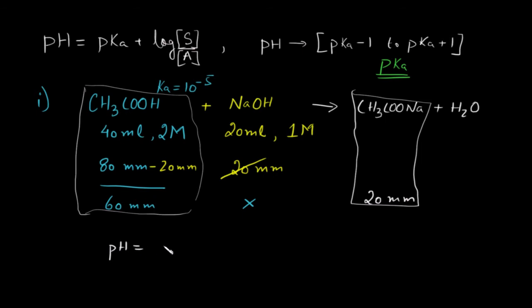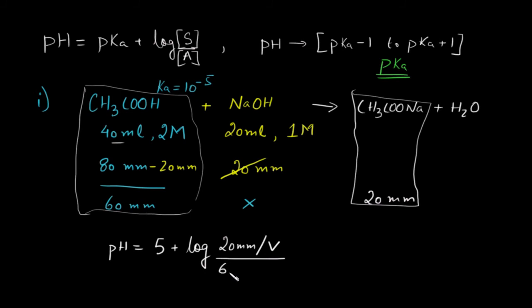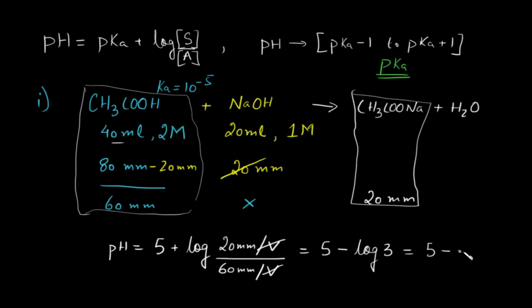So what is the pH? pH = pKa + log(salt/acid). pKa of acetic acid is 5. Salt is 20 millimoles and acid is 60 millimoles, but since both are in the same volume, the volume cancels out. So pH = 5 + log(1/3) = 5 − log 3. Since log 3 ≈ 0.48, the pH = 4.52.